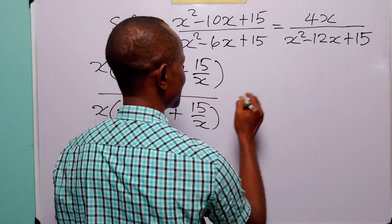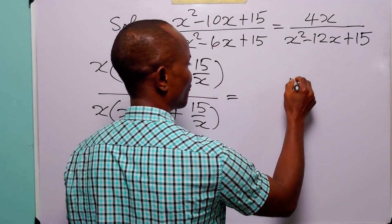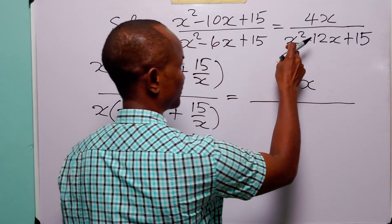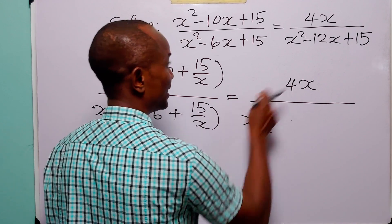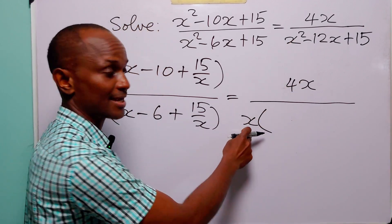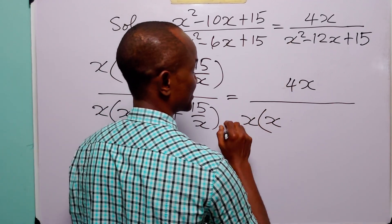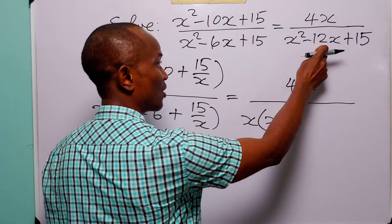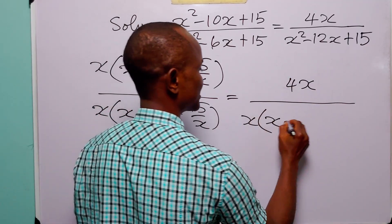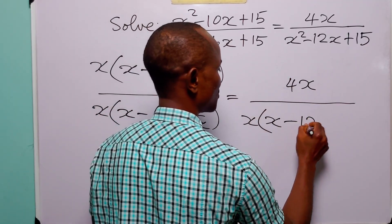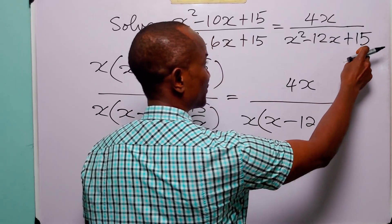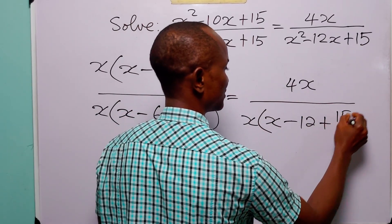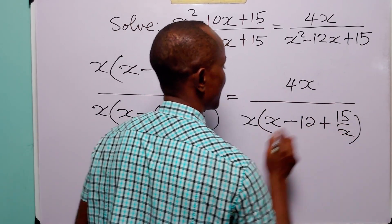On the right hand side, we have 4x over: x squared divided by x is equal to x, minus 12x divided by x is minus 12, and plus 15 divided by x is 15 over x.